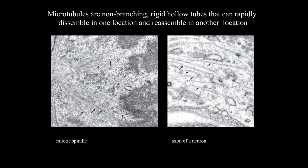Microtubules are non-branching, rigid, hollow tubes that can rapidly disassemble in one location and reassemble in another. Here, in an electron micrograph of the mitotic spindle, you can see microtubules highlighted by arrows, along with profiles of chromosomes.